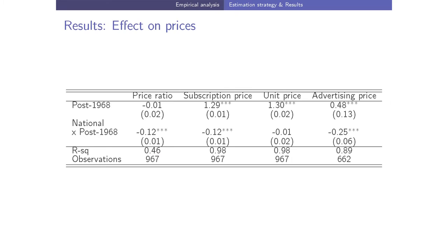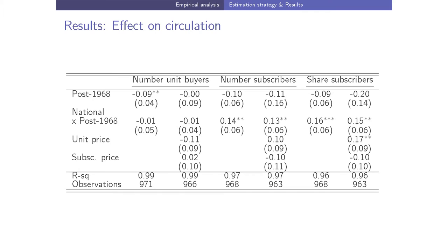The introduction of advertisement on TV leads to a 12% decrease in the price ratio for national newspapers compared to local newspapers, which is entirely driven by the decrease in the subscription price, with no effect on the unit newsstand price. As a consequence of the negative shock on advertising, advertising price decreases by 25%. This leads to an increase in the number of subscribers and an increase in the share of subscribers, with no change in the number of unit buyers.